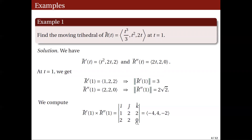To get the first component of the cross product, we delete the first column and first row, obtaining the submatrix (2,2; 2,0), giving 2·0 − 2·2 = −4. For the second component, we delete the first row and second column, giving the submatrix (1,2; 2,0), and we negate its determinant: −(0 − 4) = 4. Wait — that gives the second component as 4. The third component uses submatrix (1,2; 2,2), giving 1·2 − 2·2 = −2. So the cross product r'(1) × r''(1) = (−4, 4, −2).